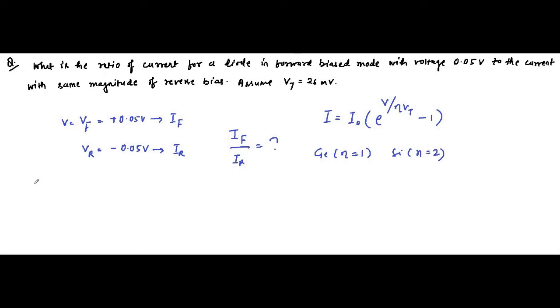So let us do. First for germanium: IF equals I0 times e to the power plus 0.05 divided by eta equals 1 times 26 millivolt is 0.026, minus 1. IR equals I0 times e to the power minus 0.05 divided by 0.026 minus 1.